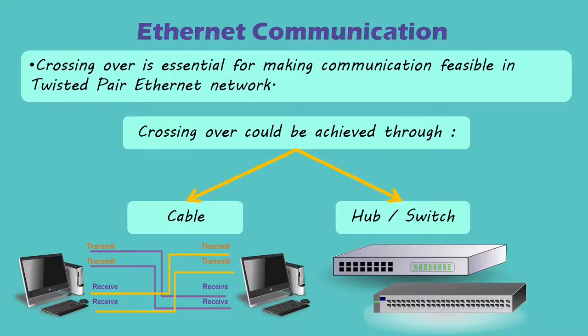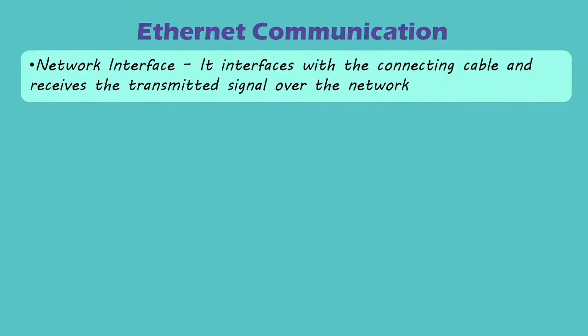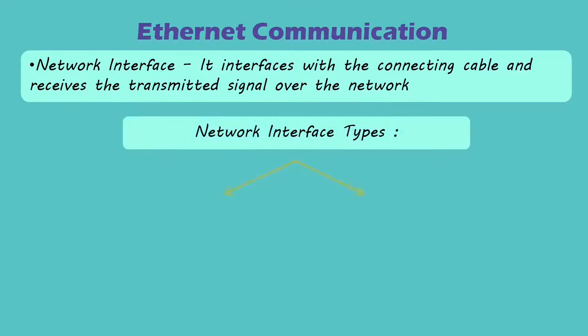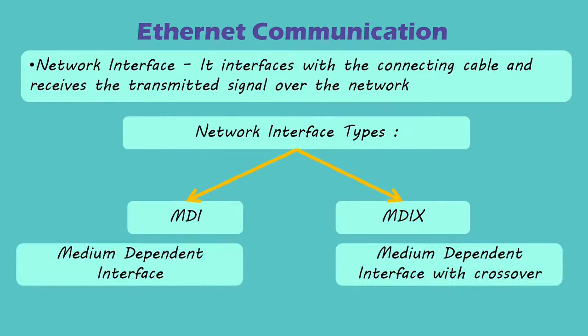This crossing over could be implemented either by cable or an intermediary device such as a hub or switch. In an Ethernet network, various types of devices are connected, like computers, hubs, switches, etc. All these devices have a network interface that interfaces with the connecting cable and receives the transmitted signal over the network. This network interface could be of two types: Medium Dependent Interface (MDI) or Medium Dependent Interface with Crossover (MDIX).